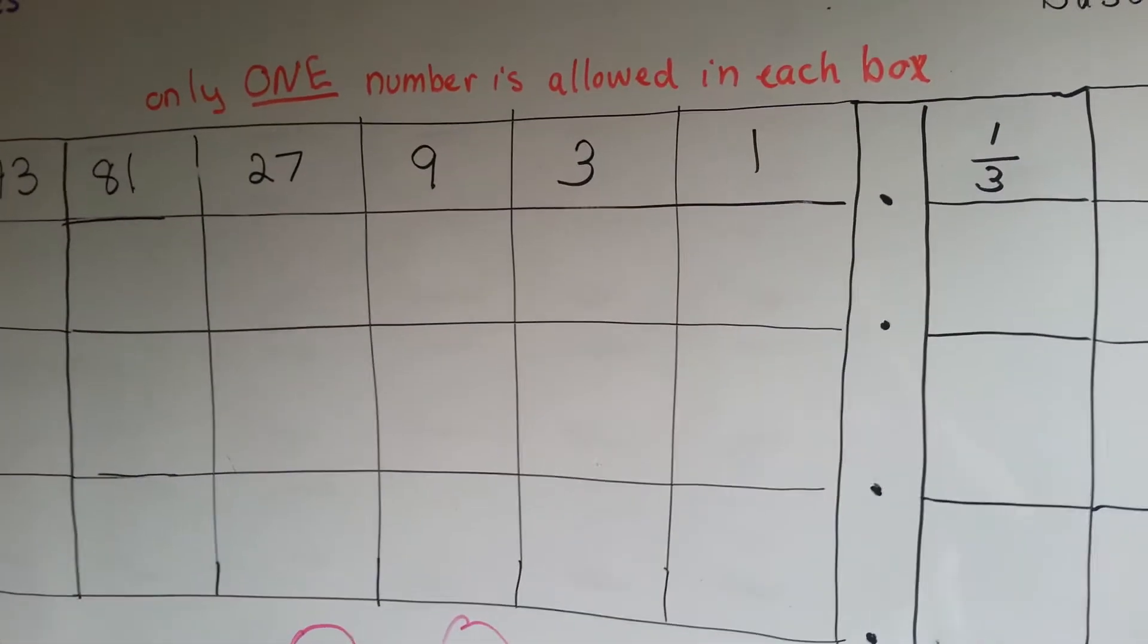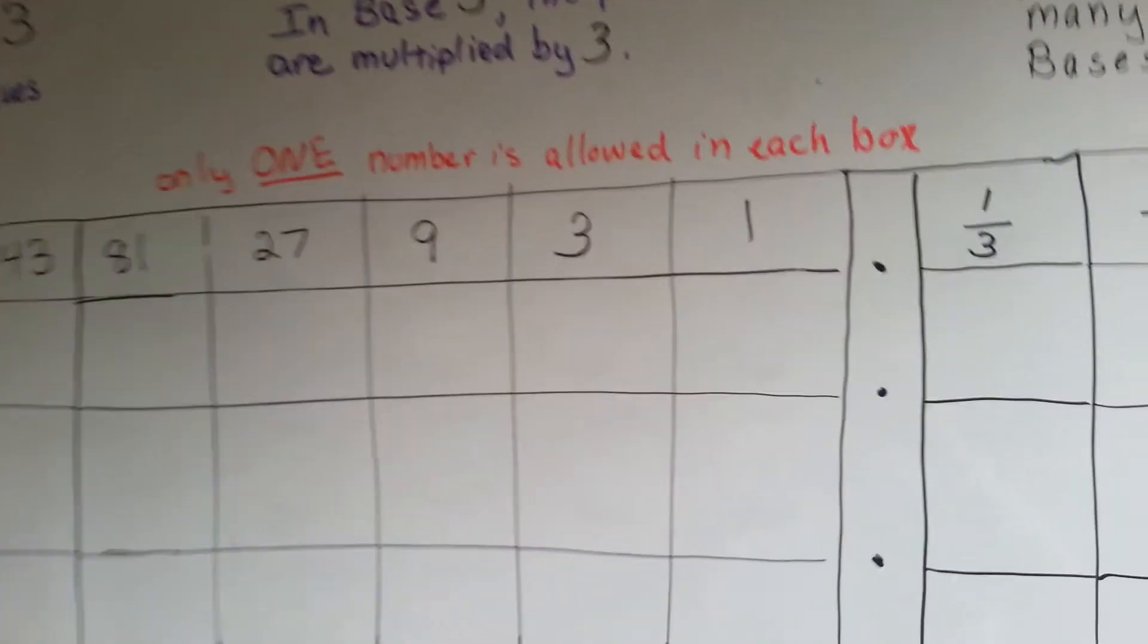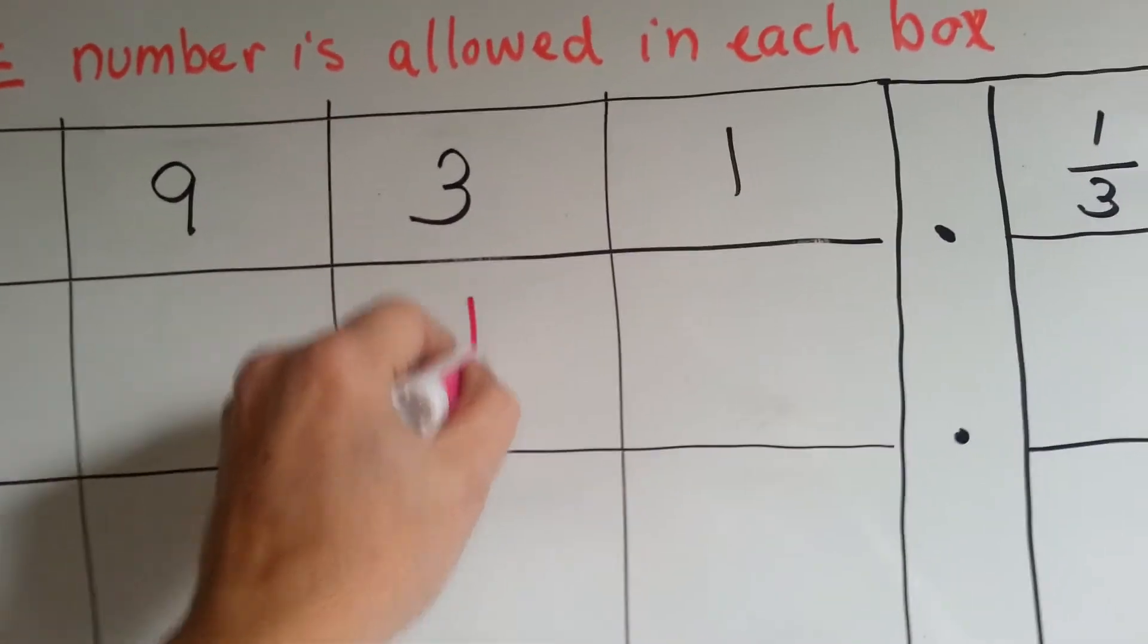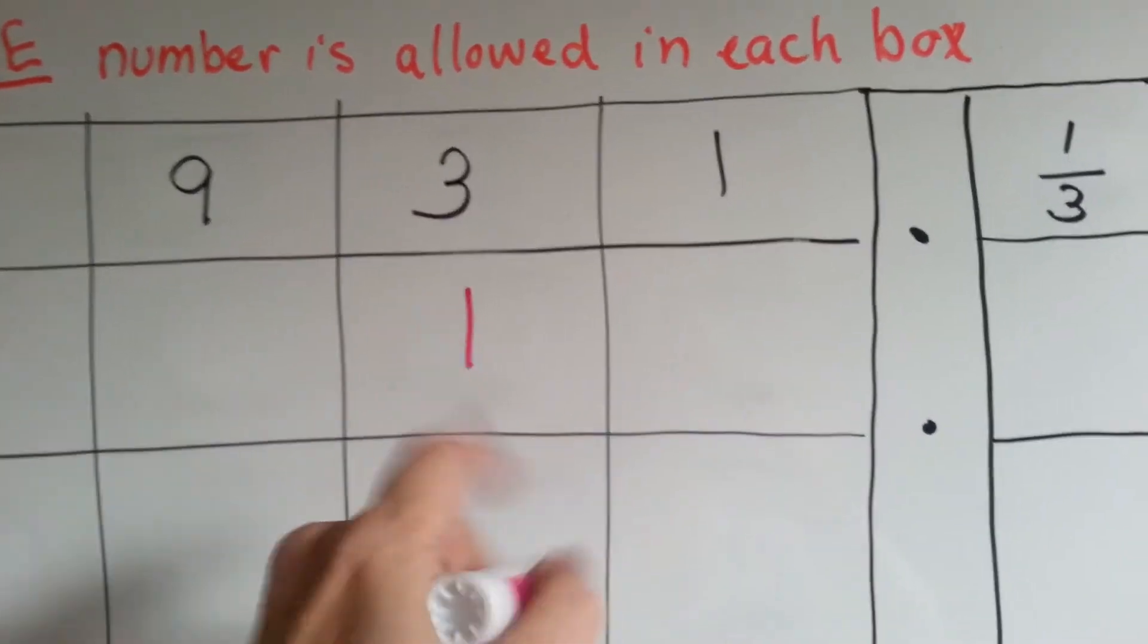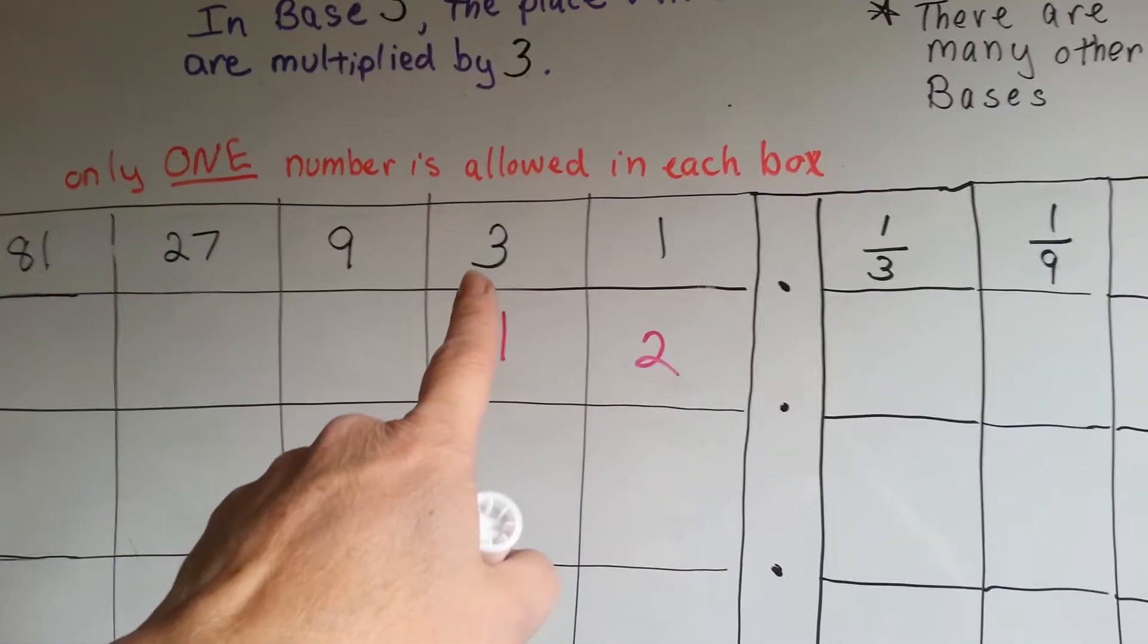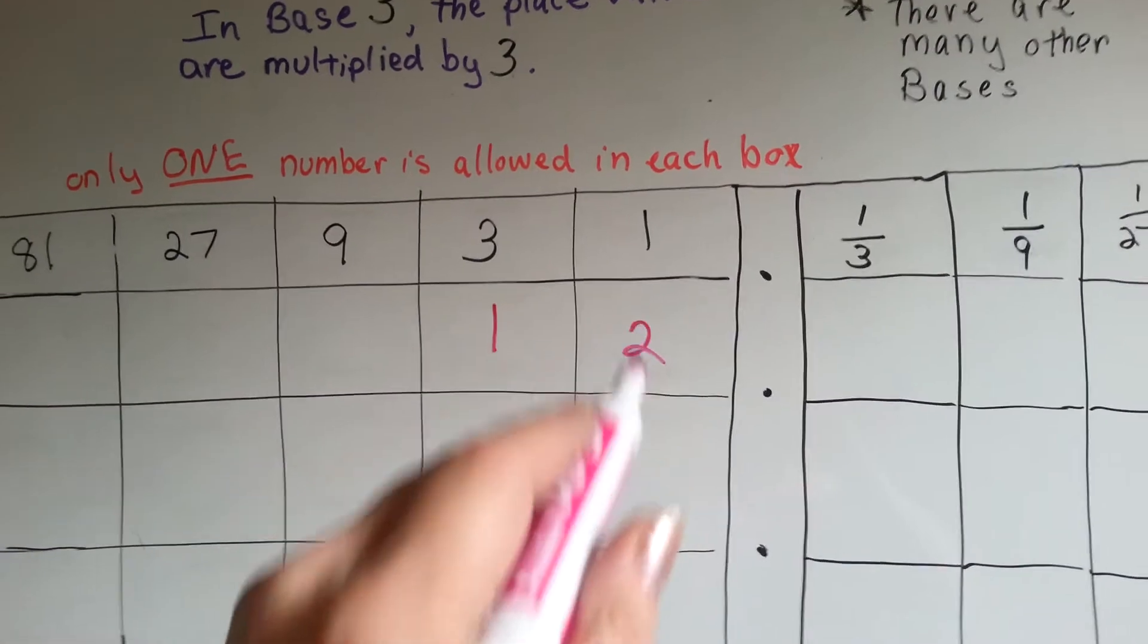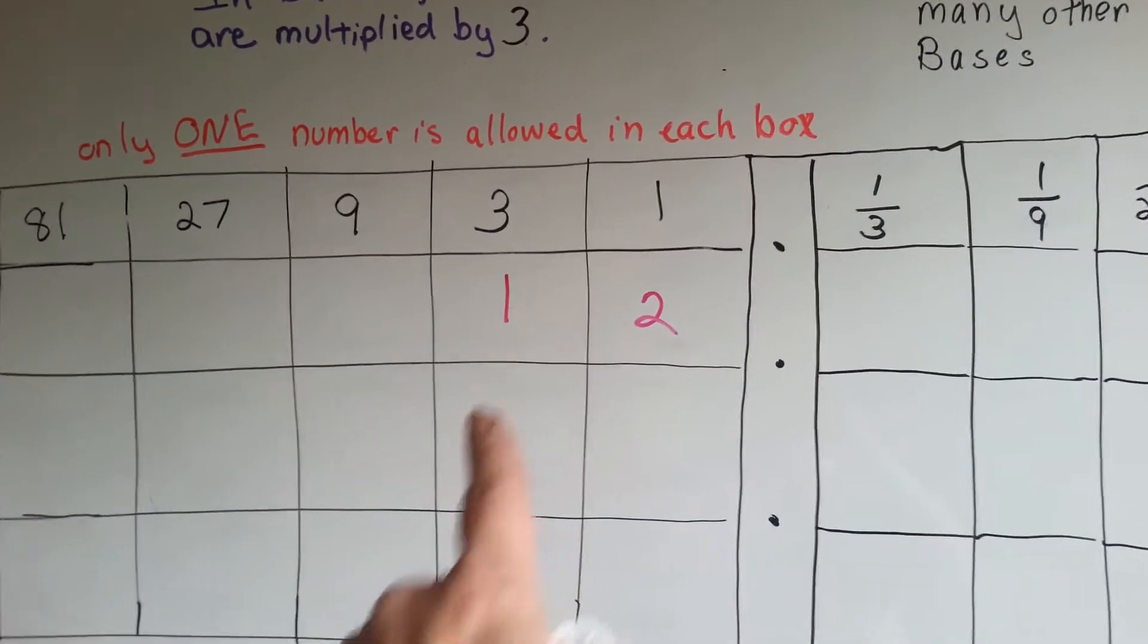If I said I wanted to write the number 5 in base 3, I would have one 3 and I'd have two 1s. That would give me 5 in base 10, see? A 3 and two 1s is 5. So it would be written as a 12.